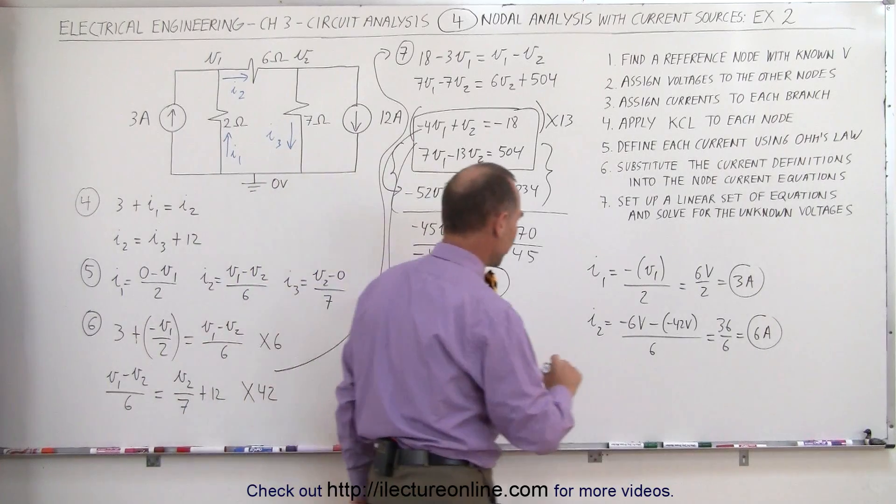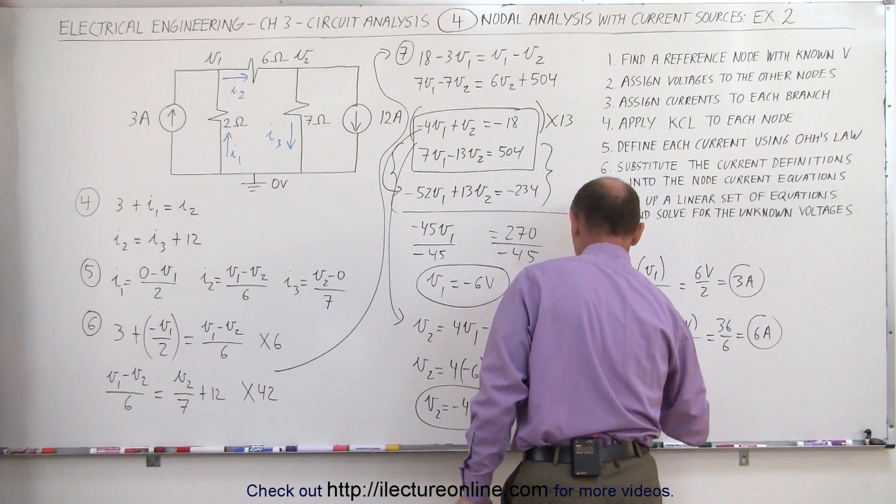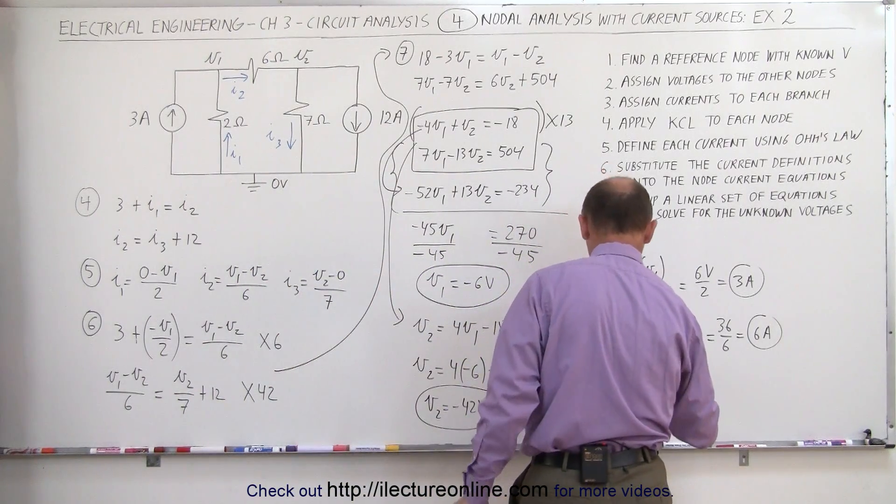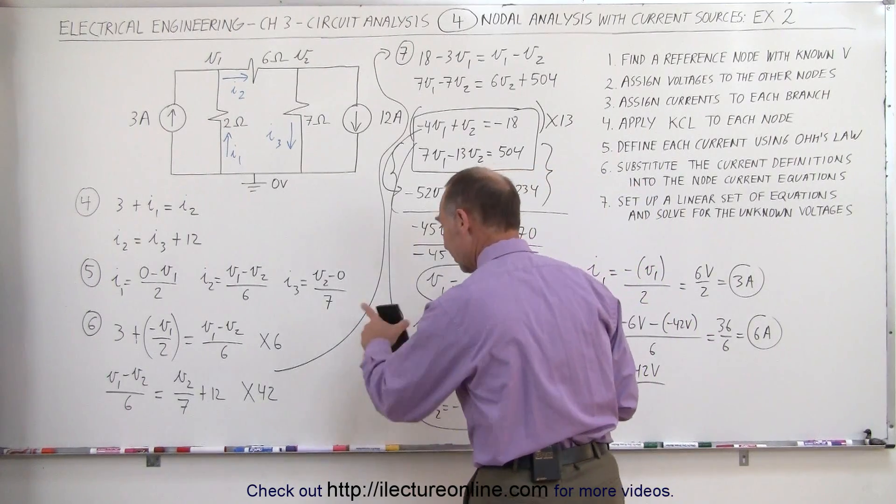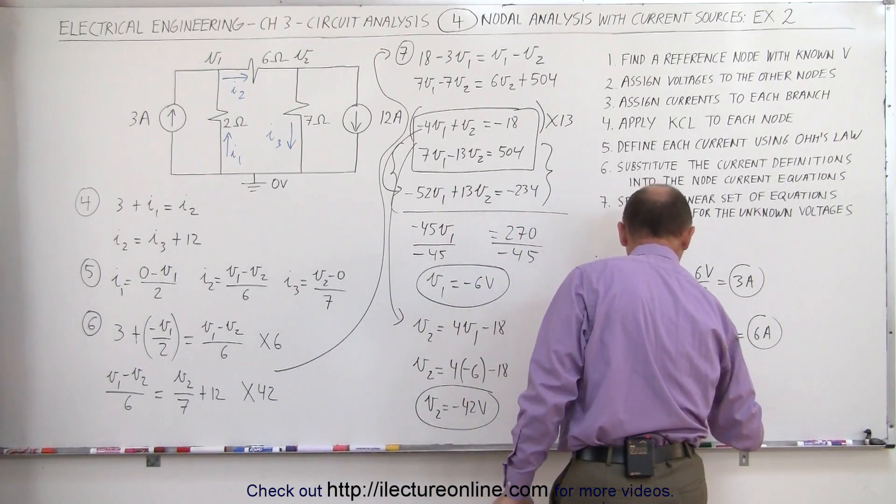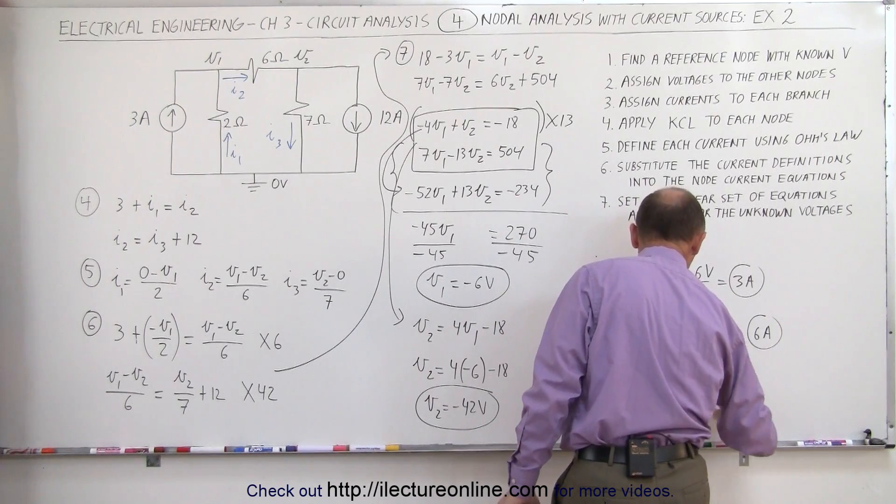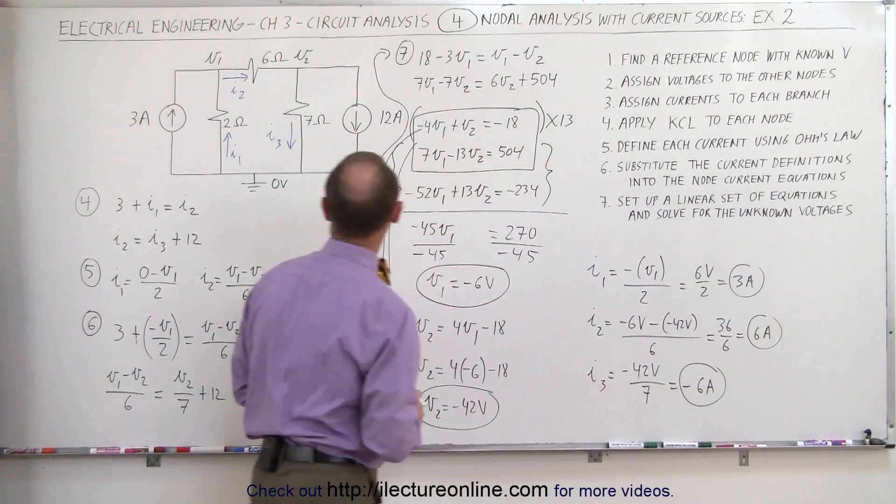And finally, when we look at I3, I3 is equal to V2, which is minus 42 volts, divided by 7, which is minus 6 amps. That's interesting. I get a negative value for I3. Why is that?